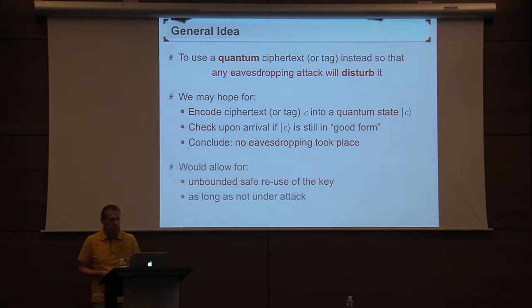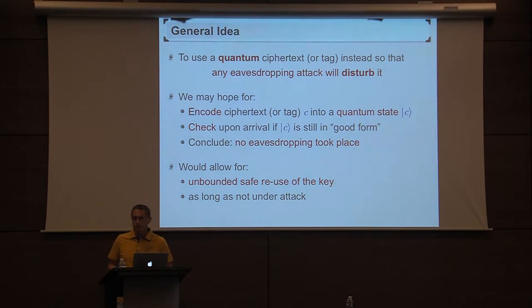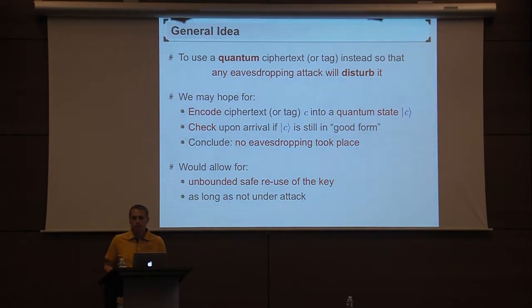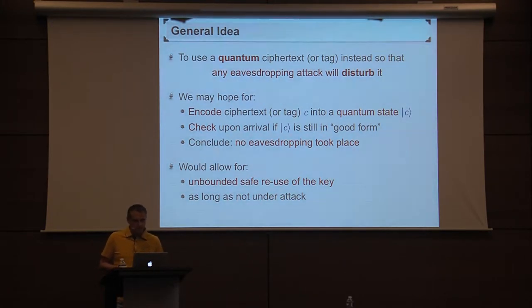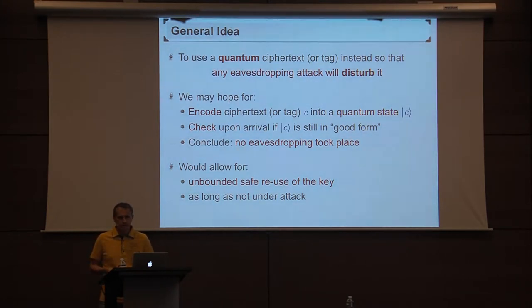If the state is in good form, we can conclude that no eavesdropping took place and therefore it's safe to reuse the key. If we had such a scheme, this would allow us for unbounded safe reuse of the key as long as we're not under attack. As soon as we are under attack and Eve may have learned information on the key, some key refreshing has to take place. The goal is to be able to reuse the key as long as we're not under attack.